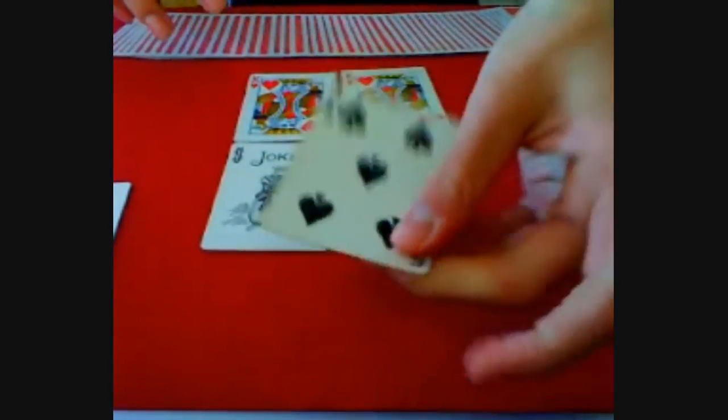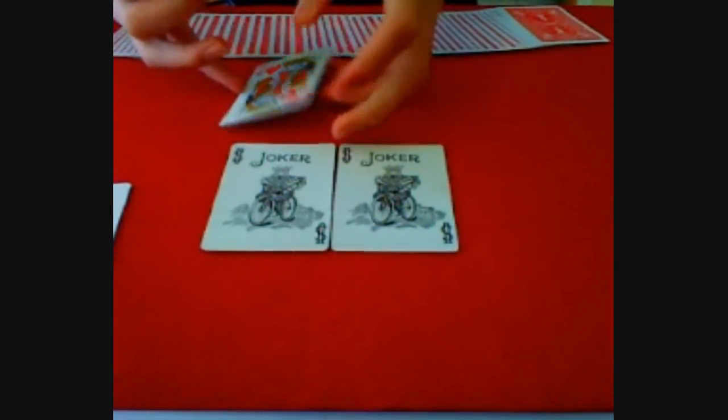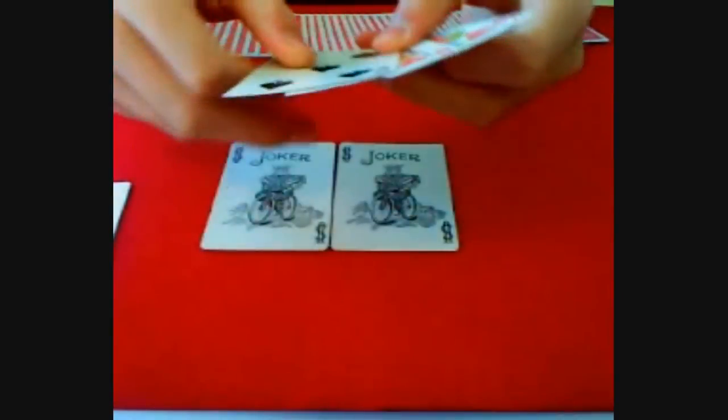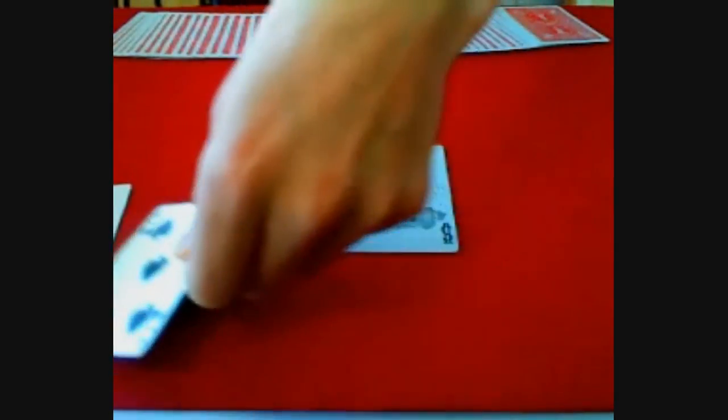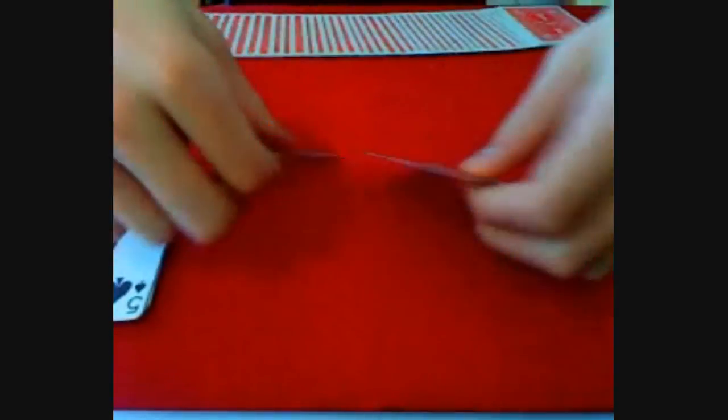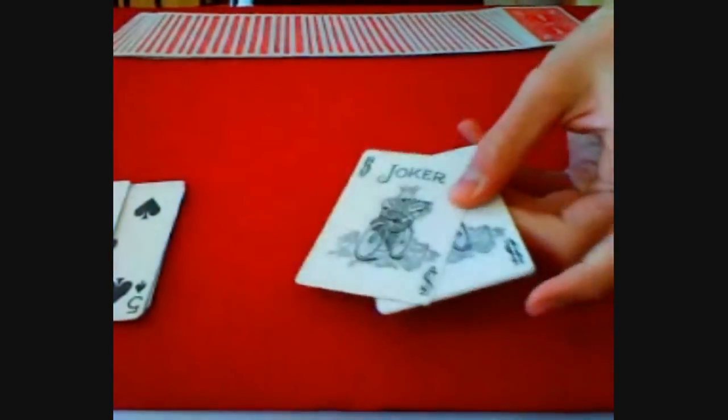You have also just a regular five of spades and two king of hearts. Both regular. Nothing going on there. Put those off to the side as well. And you'll need also another two regular jokers.